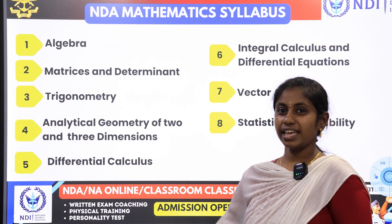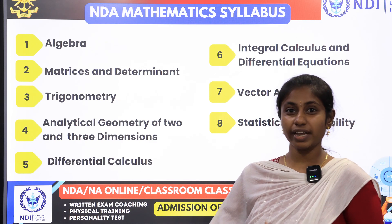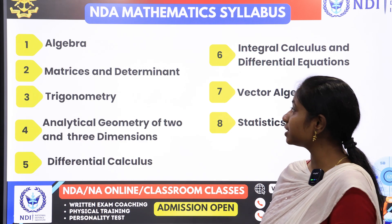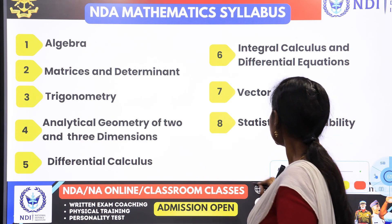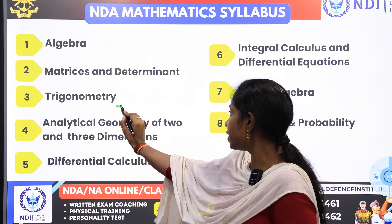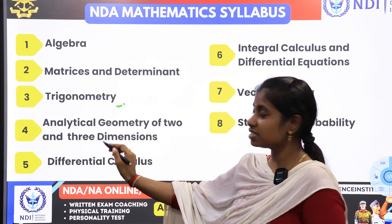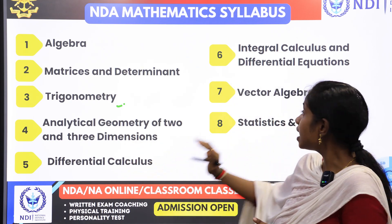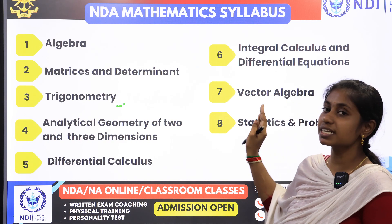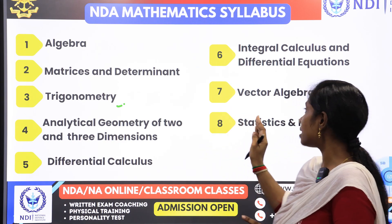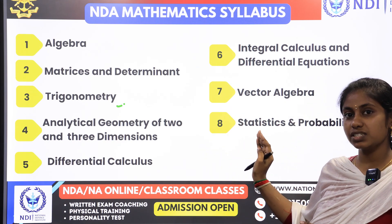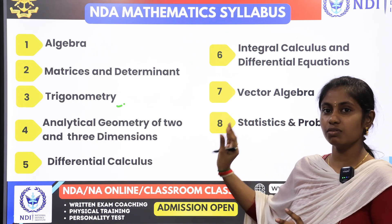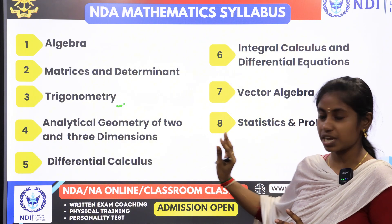In the NDA mathematics syllabus, there are eight chapters. The first chapter is algebra, second is matrices and determinants, third is trigonometry, fourth is analytical geometry in two dimensional and three dimensional, fifth is differential calculus, sixth is integral calculus and differential equations, seventh is vector algebra, and the eighth chapter is statistics and probability.